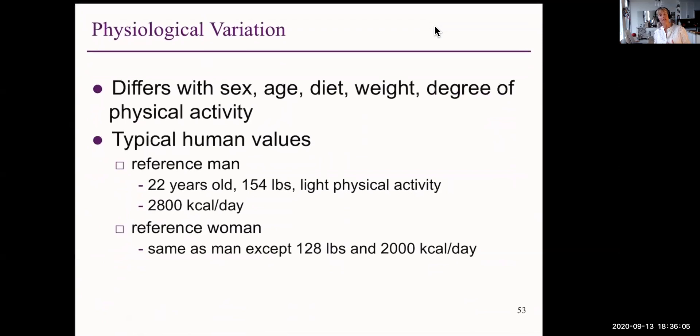Why are we different from each other? Well, our physical variation differs with sex, male and females, age, diet, weight, degree of physical activity. That all changes our physiology. We may have a large heart due to our exercise, for example.